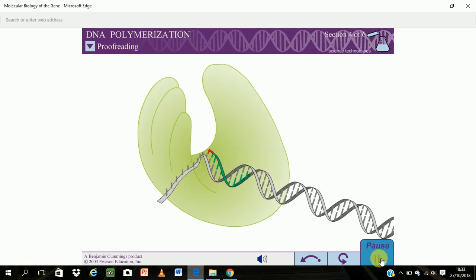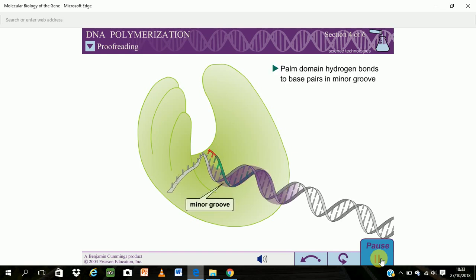Another function of the palm domain is proofreading. The palm region makes extensive hydrogen bond contacts with the base pairs in the minor groove of the newly synthesized DNA. These contacts are not base specific, but they only form if the recently added nucleotides are correctly base paired.